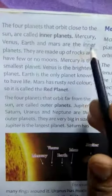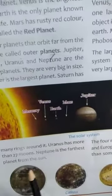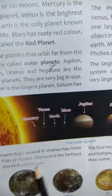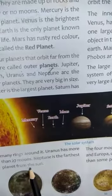Jupiter is the largest planet — Jupiter sabse bada grah hai. Saturn has many rings around it — Saturn ke charon or bahut se rings hote hain. Uranus has more than 27 moons — Uranus ke 27 se adhik chandrama hain. Neptune is the farthest planet from the sun — Neptune Surya se sabse door wala grah hai.